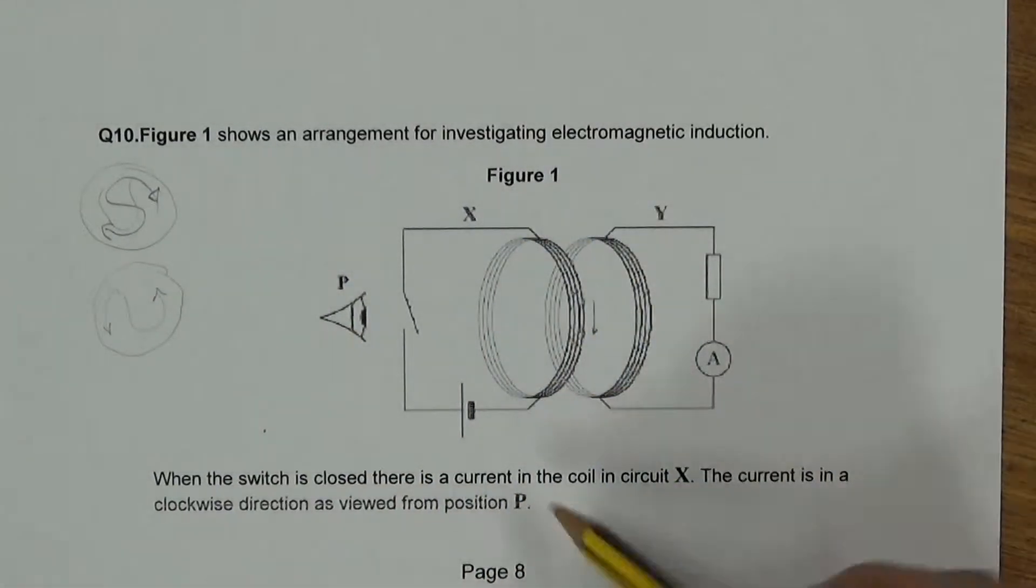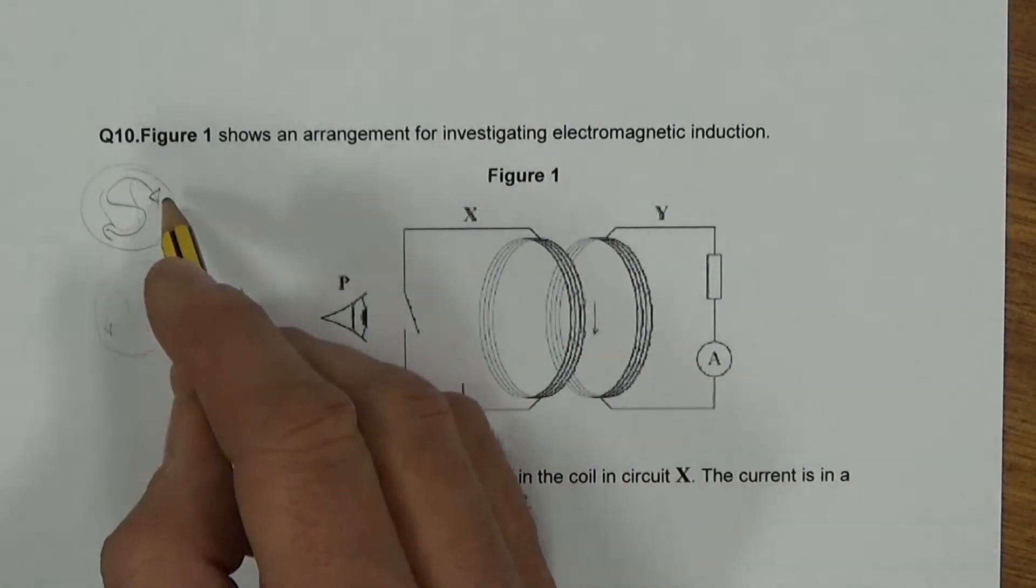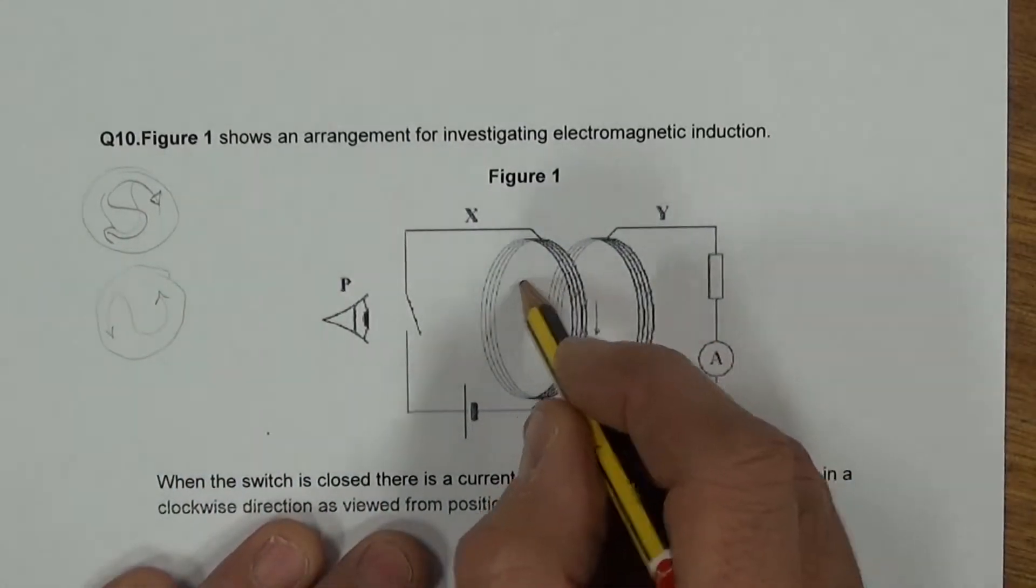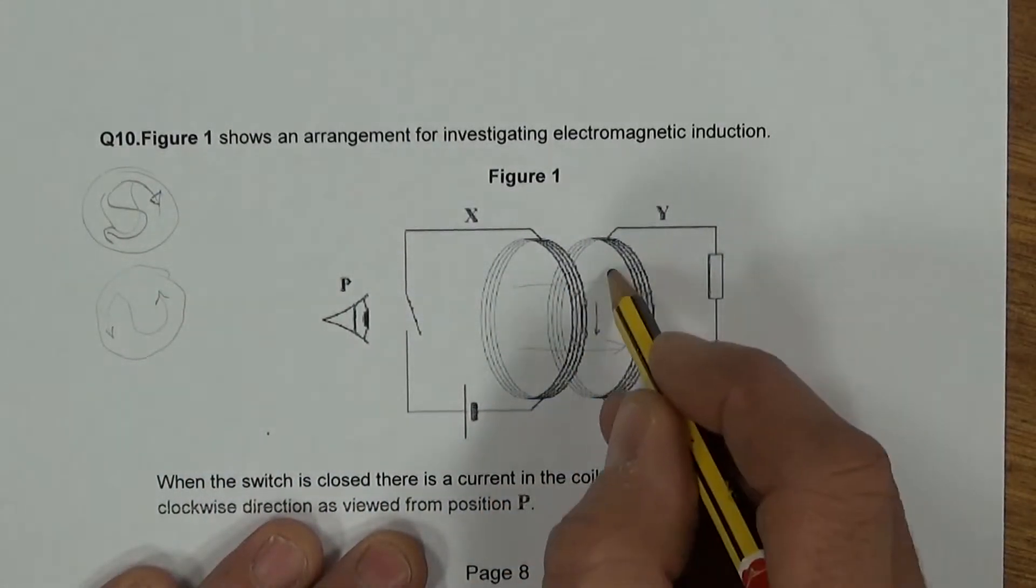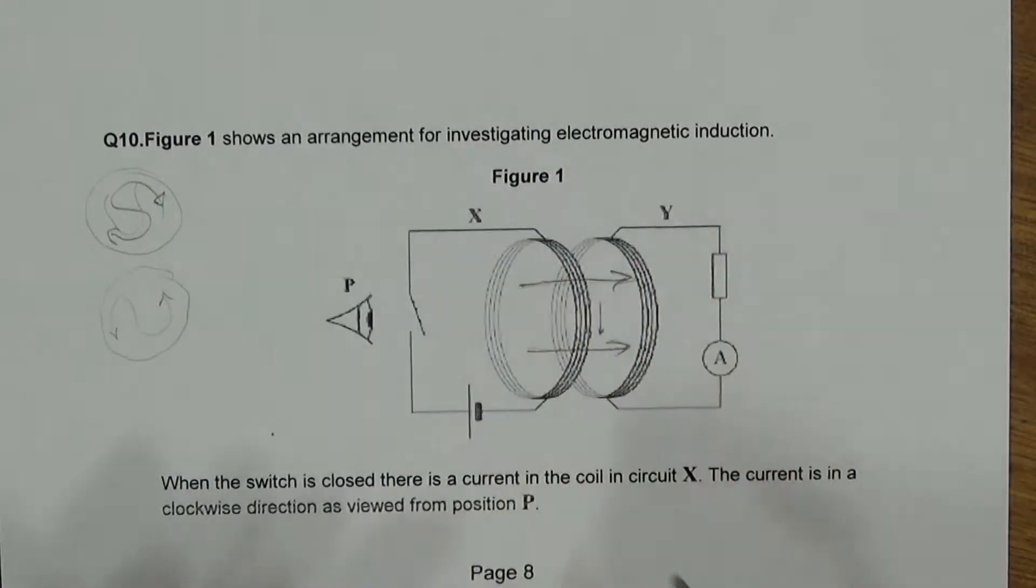So it's going around clockwise. Clockwise means that he's looking at the south pole, as you can see from this sketch here. Therefore, the field lines are basically developing in that direction as the switch is closed. There's a magnetic flux that develops once the switch is closed going into that direction.